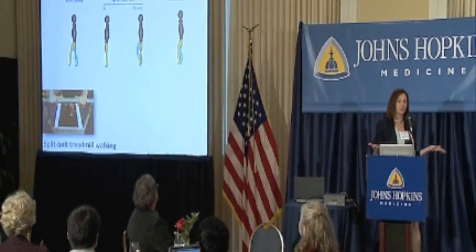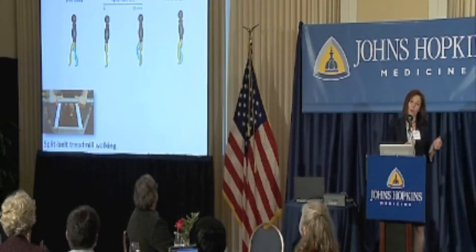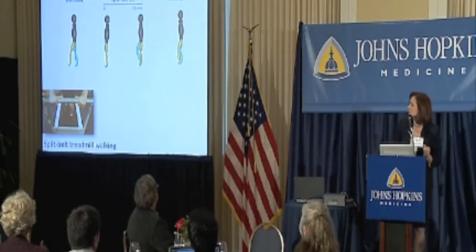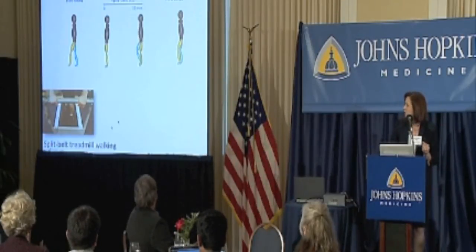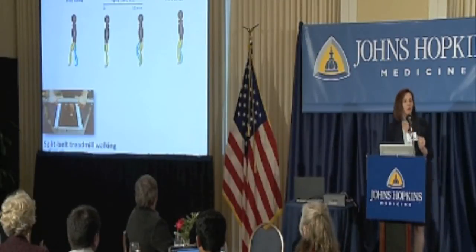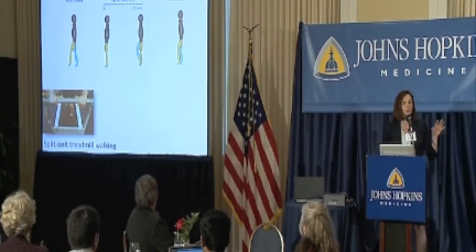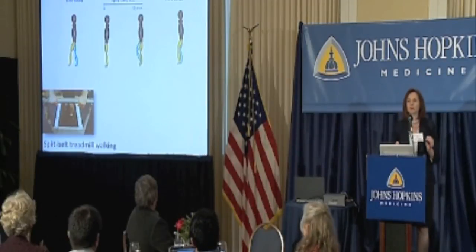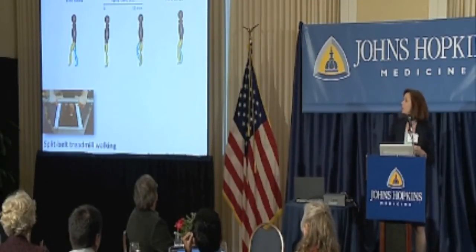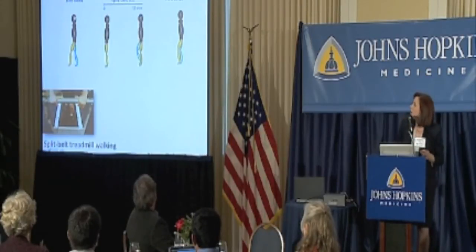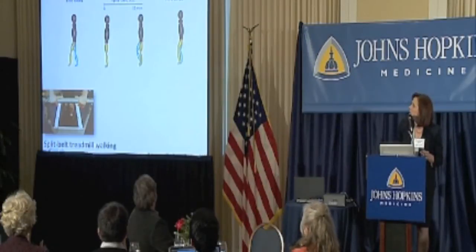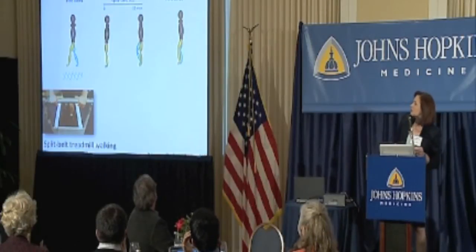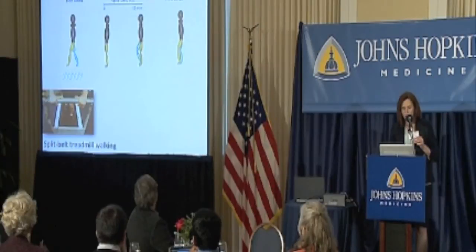How do you study somebody learning a walking pattern? You can study infants, or you can do things to their walking pattern to make them have to learn something new. In this case, we use a split-belt treadmill. There are two belts and one leg can walk on one belt, the other on the other belt. We can make one leg walk three times faster than the other, or one leg walk forward and the other walk backwards, manipulating the speeds to make people do things they don't normally do.